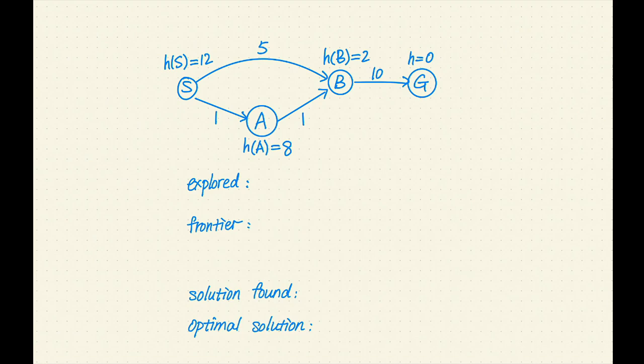First, add the start state S to the frontier. Next, remove S from the frontier and add S to the explored set. S is not a goal node. Let's expand it. S has two successors, A and B. Let's add S-A and S-B to the frontier. S-A has an F value of 9 and S-B has an F value of 7.